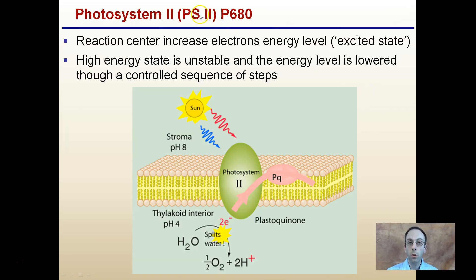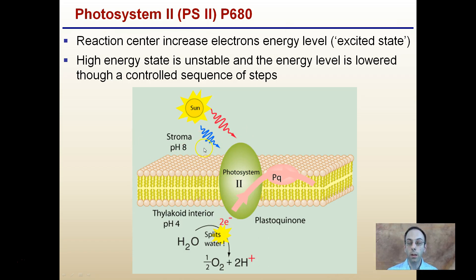Photosystem II, abbreviated PS2 or P680, absorbs light at 680 nanometers wavelength. It's the reaction center that raises the electron's energy to the excited state. This high-energy state is unstable, and the energy level is lowered through a controlled sequence of steps. Keep in mind that when we split our water, we're getting hydrogen ions, so the pH of the thylakoid interior is 4 — acidic — while the stroma outside has a pH of 8, slightly basic.